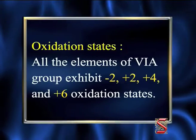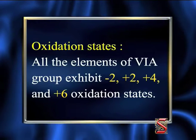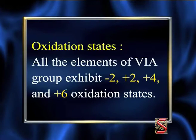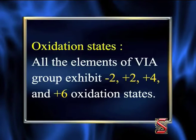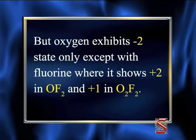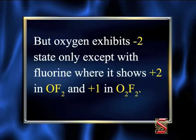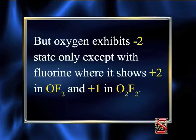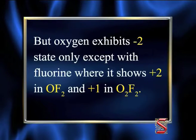Now we shall take up oxidation states in this group. All the elements of the 6A group exhibit -2, +2, +4 and +6 oxidation states. But oxygen exhibits the -2 state only, except with fluorine when it shows +2 in OF2 and +1 in O2F2.